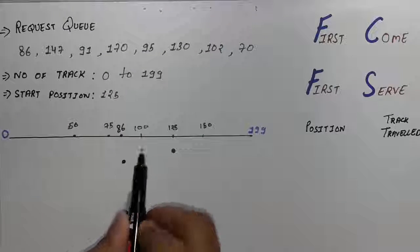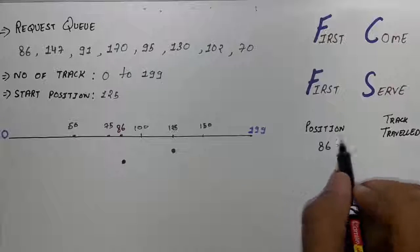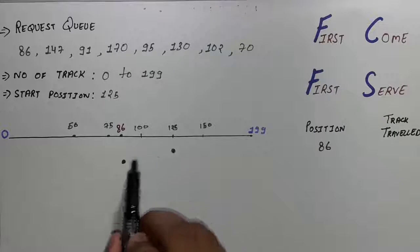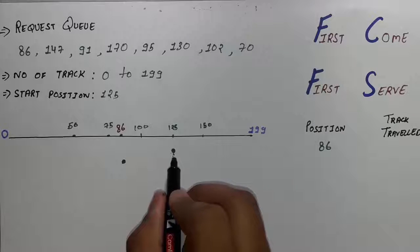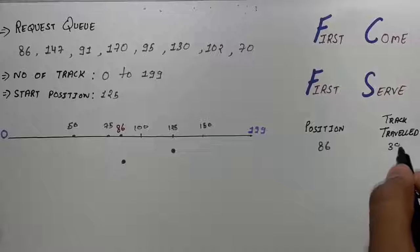Now because our header moved to 86 we have to write 86 and then subtract the starting position by the current position. So 125 subtract 86 will be 39. So write 39 here.